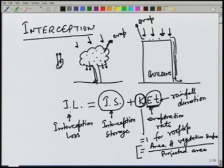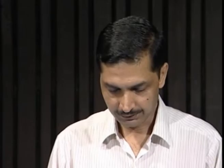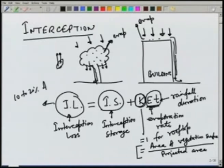From a tree leaf surface, we have some initial storage, then k times e times t gives us the evaporation loss during the rainfall. This gives us the entire interception loss from a structure or vegetation, and this typically is about 10 to 20 percent of the rainfall or precipitation. If we have a vegetated area it is typically 10 to 20 percent, but sometimes if you have very dense forest, it may be more than 25 percent.